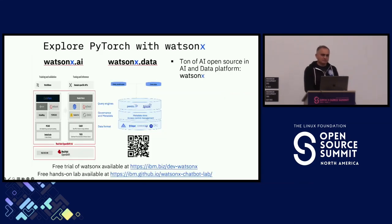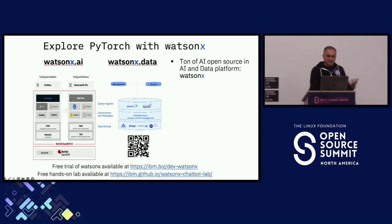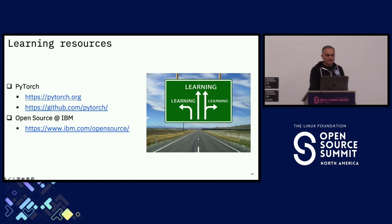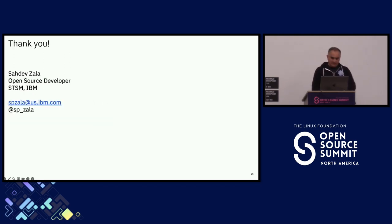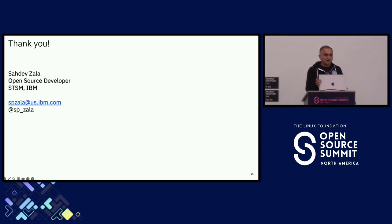At IBM we use PyTorch as part of our watsonx platform, which has a stack of different open-source projects including PyTorch for training and inferencing. We also provide a free lab for learning. pytorch.org remains one of the best places to get started, along with the PyTorch GitHub repo. With that, we can open for questions — feel free to reach out to me and I'm happy to discuss more.